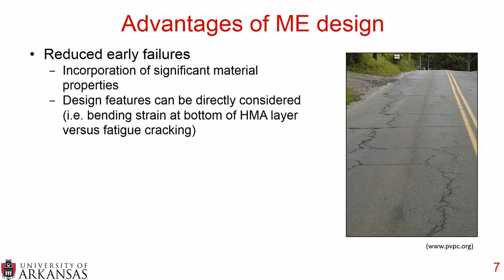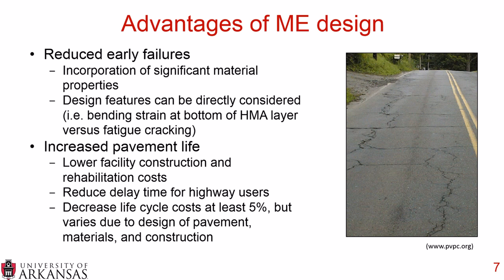Some of the advantages of mechanistic empirical design include reduced early failures because we incorporate significant material properties — there are a lot more inputs available. Features can be directly considered; for example, you can quantify the strain at the bottom of the hot mix asphalt layer and correlate that to the amount of fatigue cracking that occurs in the field. Another advantage is increased pavement life, which would lower facility construction and rehabilitation costs, reduce delay time for highway users, and potentially decrease lifecycle cost by at least 5%, though this varies due to design, materials, and construction.